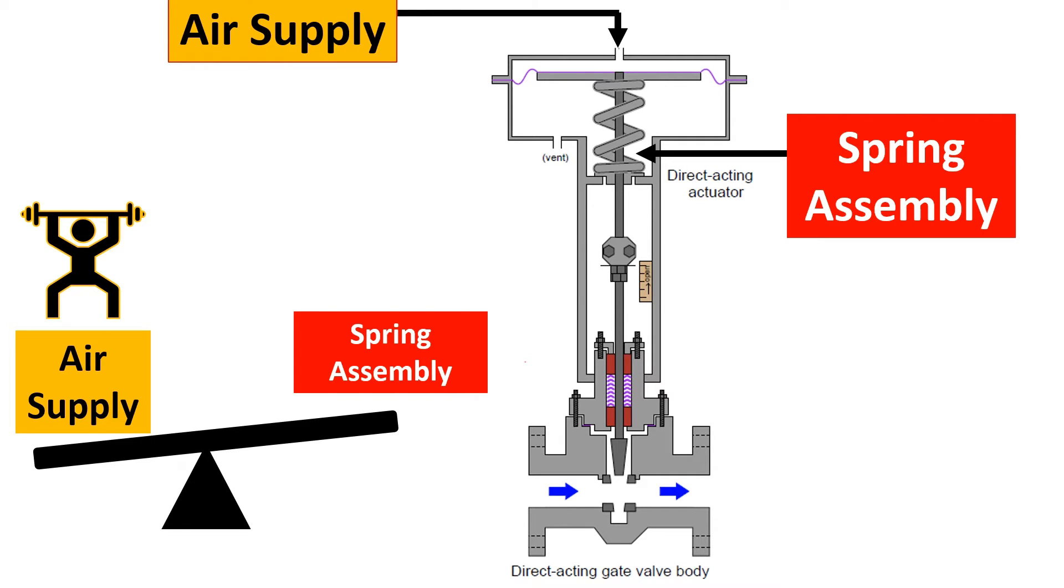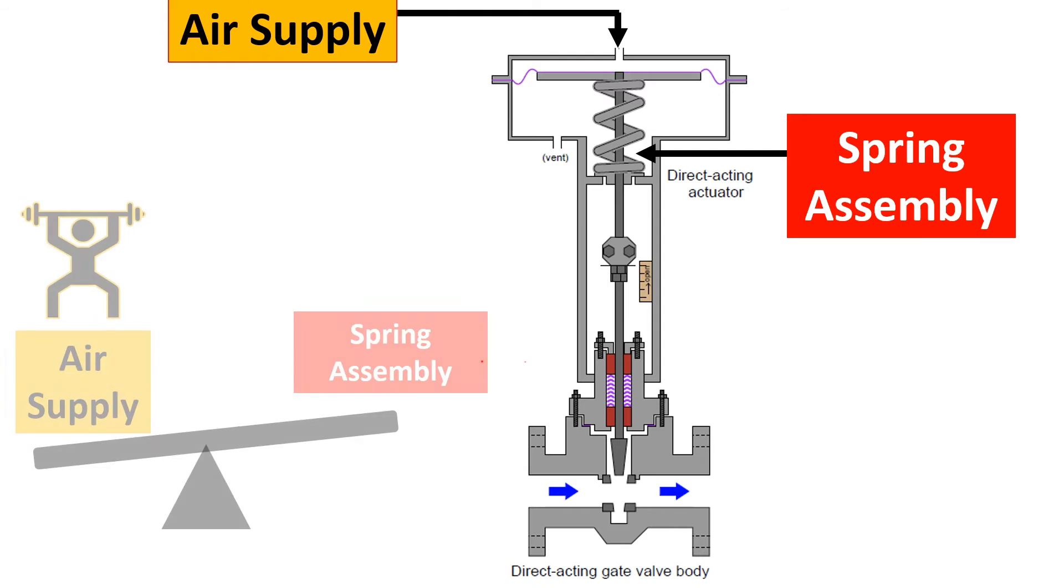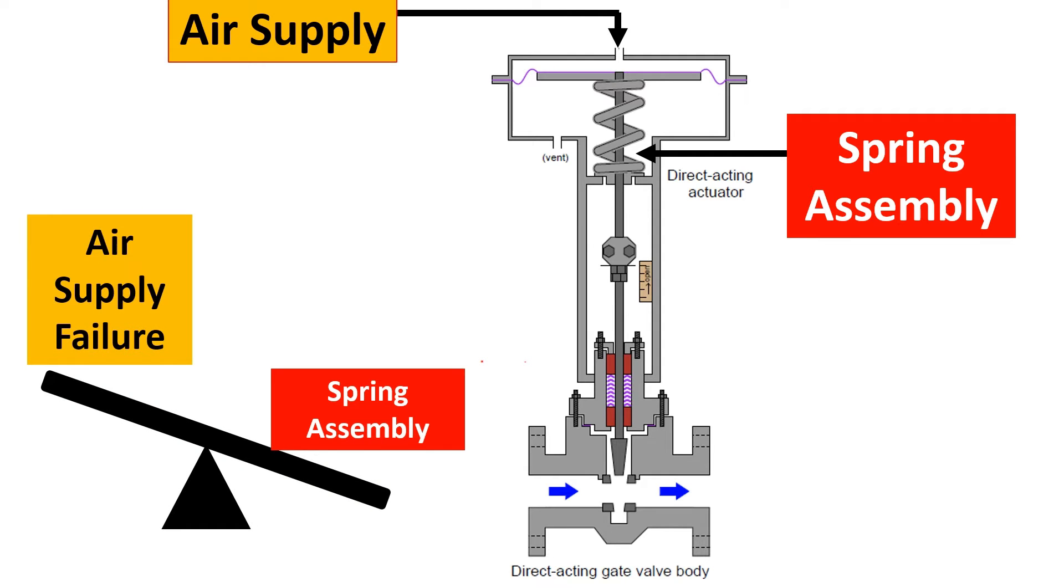Air supply has an upper hand, but now imagine in the opposite direction where the air supply has failed. So the spring assembly is going to now have an upper hand and the spring assembly will direct the valve to its failure mode which could be fail open or fail close.